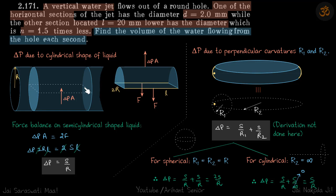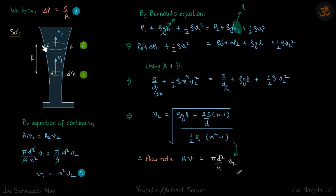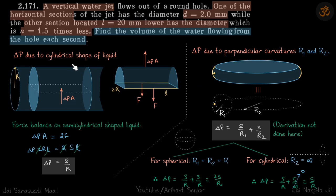Before attempting the problem: because this surface is cylindrical in nature, until now we have discussed how to calculate the excess pressure inside a spherical surface. But these surfaces are cylindrical, so let's find how to calculate the excess pressure due to the cylindrical shape of liquid. We'll calculate this from basic mechanics, and then we'll use a more general rule applicable to any surface.